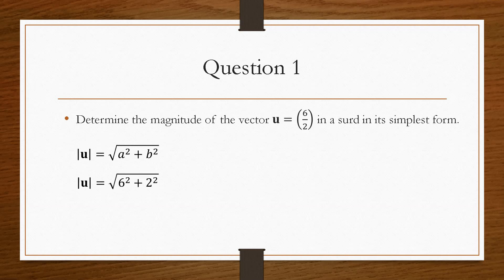Now we'll substitute in our values of a and b, so 6 being the value of a and 2 being the value of b. Now we'll square them and add them together, so we'll have 36 plus 4, so we have then the square root of 40.